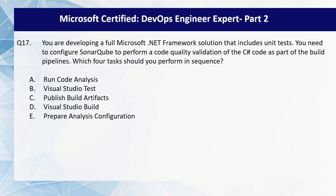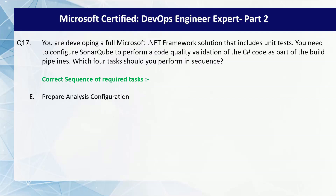Next question. You are developing a full Microsoft .NET Framework solution that includes unit tests. You need to configure SonarQube to perform code quality validation of C# code as part of the build pipeline. The four tasks to perform in sequence are: first, prepare the analysis configuration for SonarQube, setting up the connection between Azure DevOps and SonarQube and defining project settings and authentication; second, build your .NET project to generate the necessary binaries and analysis data; third, run the unit tests; and finally, run the code analysis using the SonarQube tools.